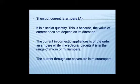The current in domestic appliances is of the order of an ampere, while current in electronic circuits is in the range of micro ampere or milli ampere. Micro means 10 raise to minus 6 and milli means 10 raise to minus 3. Means it is very small amount of current. Very interesting one. Current through our nerves, it is of the order of micro ampere.